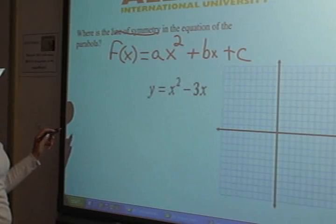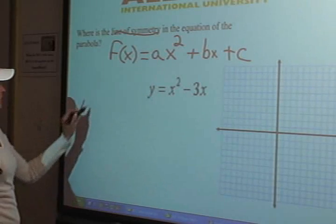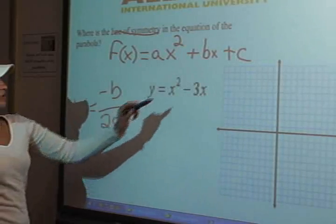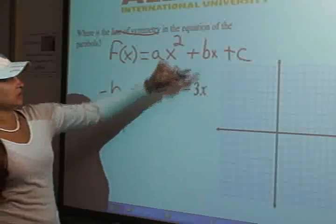And we know that x is equal to negative b over 2a. So this is basically here like this.